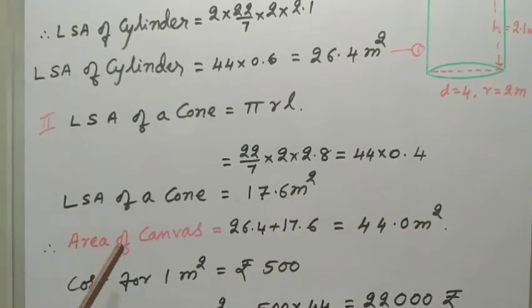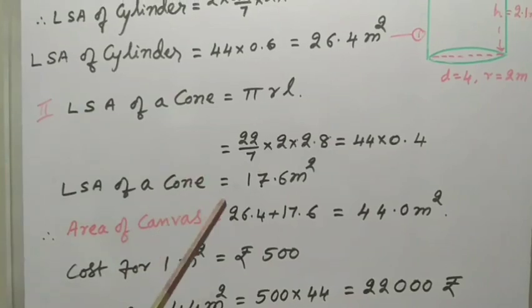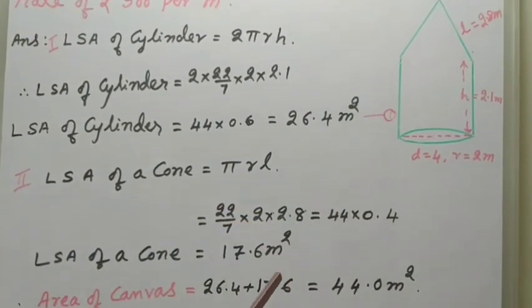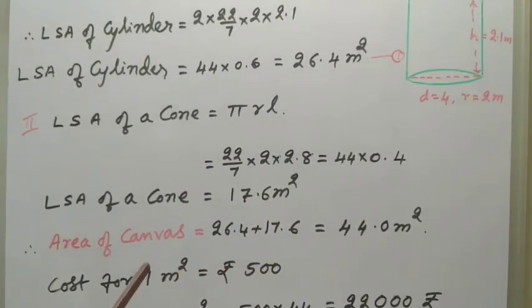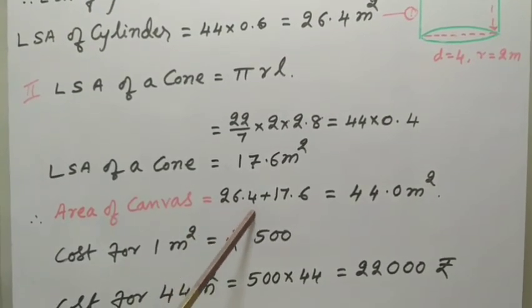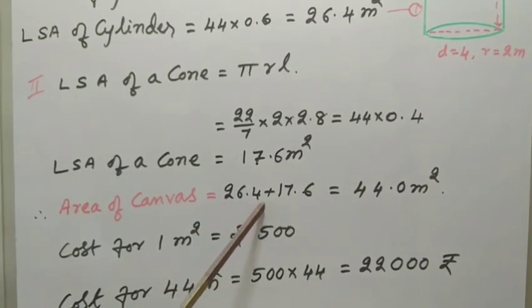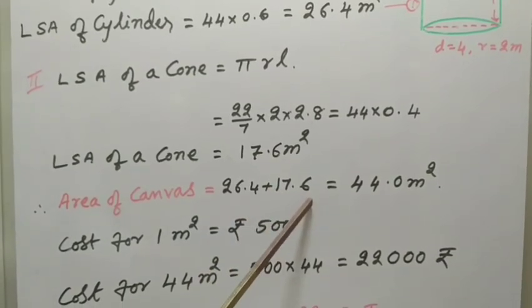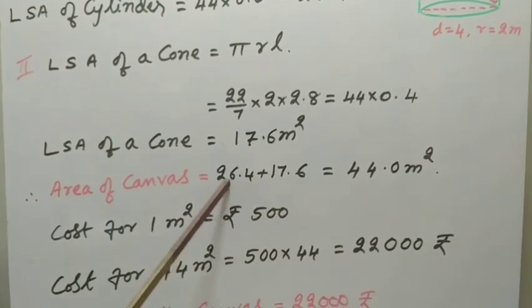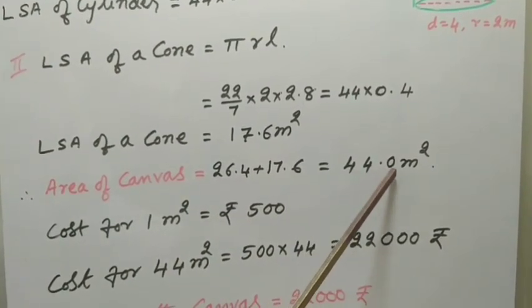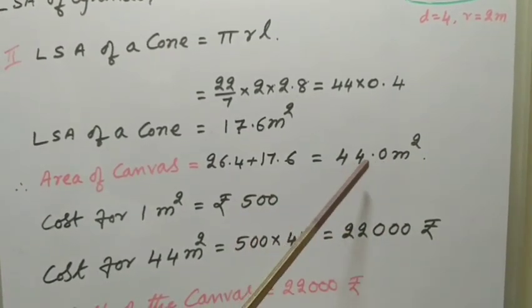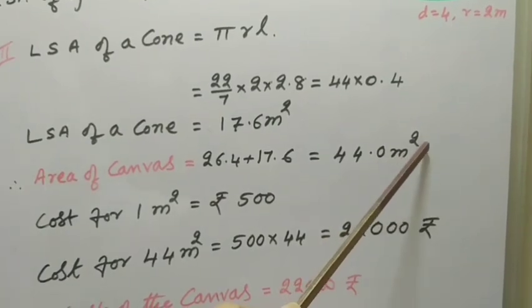Now, total area, area of canvas means both lateral surface area of cylinder and lateral surface area of cone. Therefore, area of canvas equal to LSA of cylinder plus LSA of cone. We have to add these two. That means sum of these two equal to 44.0 meters square.